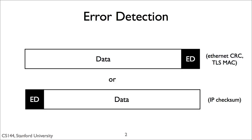At a high level, error detection looks like this. We have a payload of data. We'll calculate some error detection bits over that data and either append or prepend it to the payload. For example, Ethernet appends a cyclic redundancy code or CRC, while Transport Layer Security, TLS, appends a message authentication code. IP prepends a checksum, which it places in the IP header.